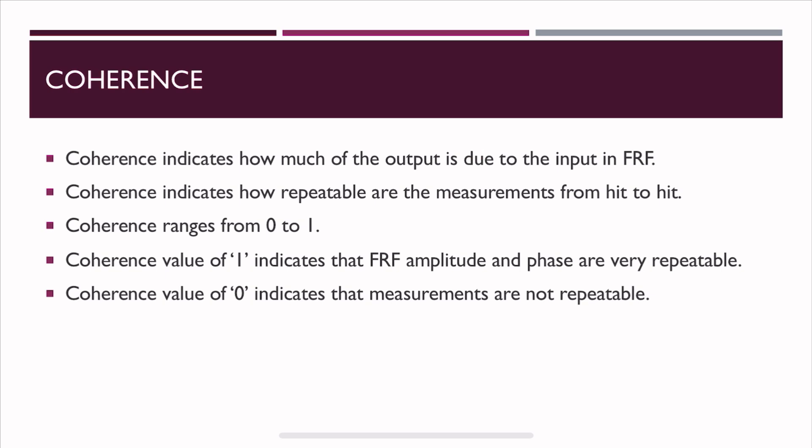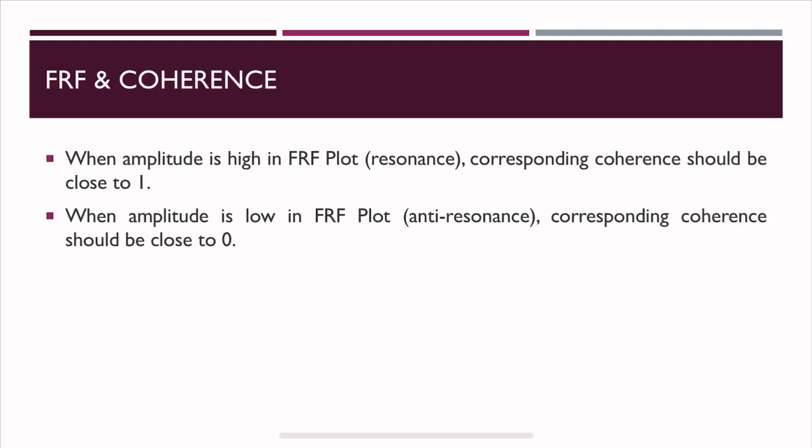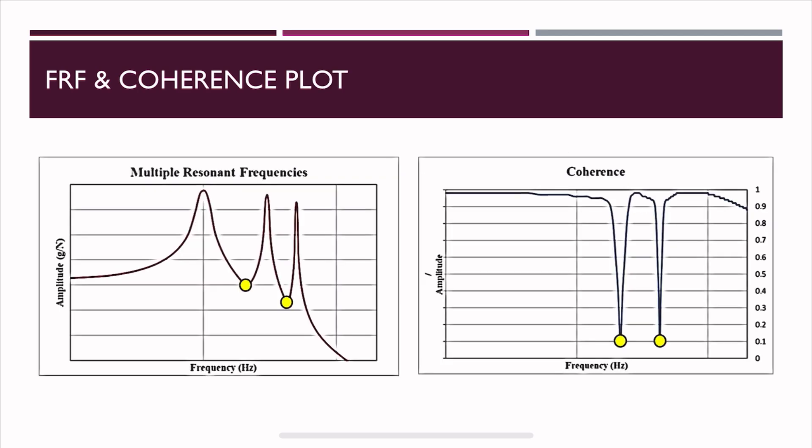Coherence indicates how much of the output is due to the input in FRF, and shows how repeatable measurements are from hit to hit. Coherence ranges from 0 to 1 — a value of 1 indicates the FRF amplitude and phase are very repeatable, while a value of 0 indicates measurements are not repeatable. When the FRF amplitude is high (resonance), the corresponding coherence should be close to 1; when amplitude is low (anti-resonance), coherence should be close to 0.